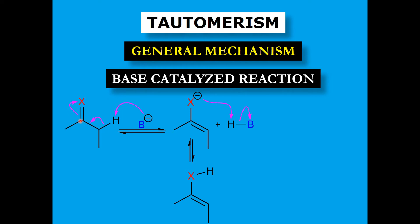The electrons left behind by this hydrogen are shared between these two carbon atoms. As a result, the pi bond between this carbon and atom X is shifted towards X. Now we have a carbon-carbon double bond and a single bond between carbon and X, but X has a negative charge, making it unstable. It then abstracts the proton from BH, regenerating the base B⁻, and finally we have a stable molecule.